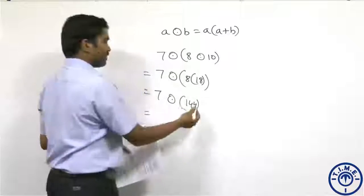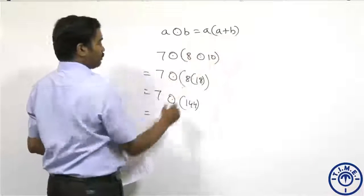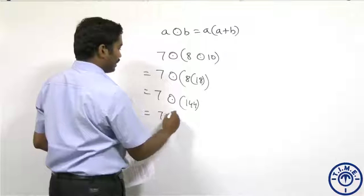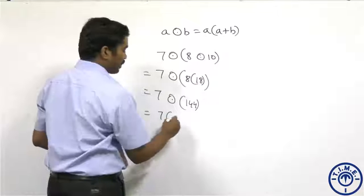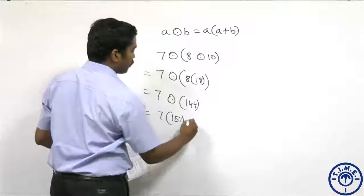So what is 7 ⊙ 144? Since a ⊙ b = a × (a+b), 7 ⊙ 144 equals 7 × (7+144), which equals 7 × 151.